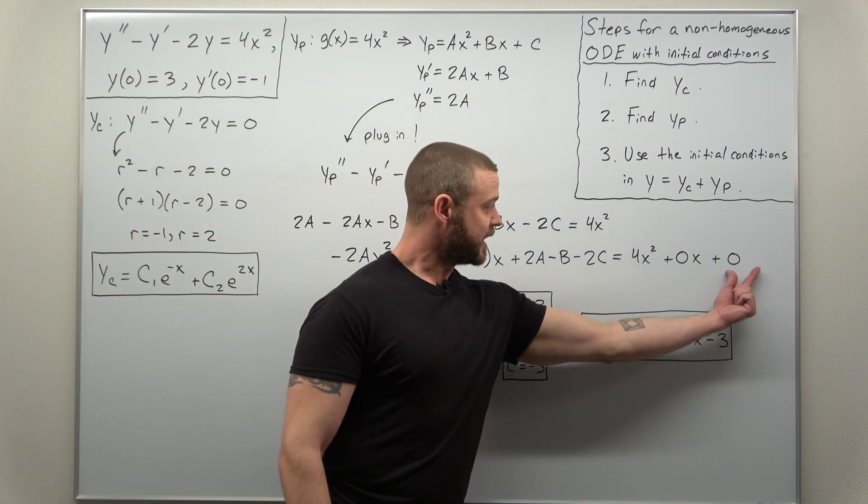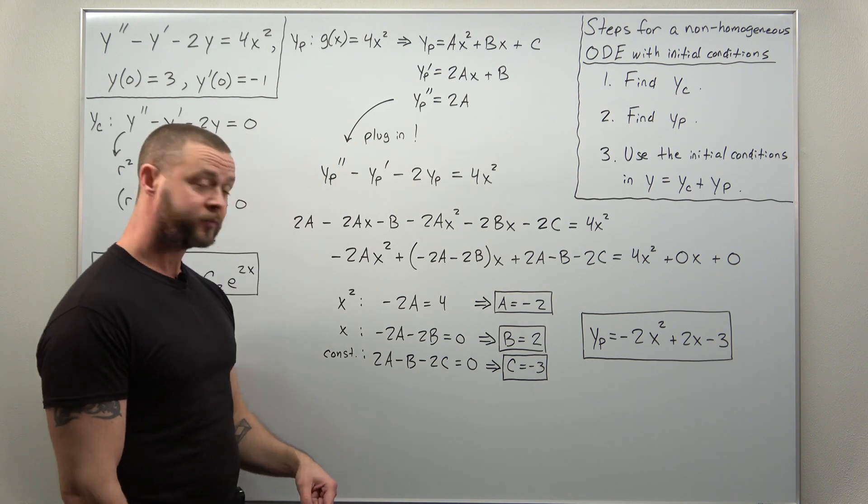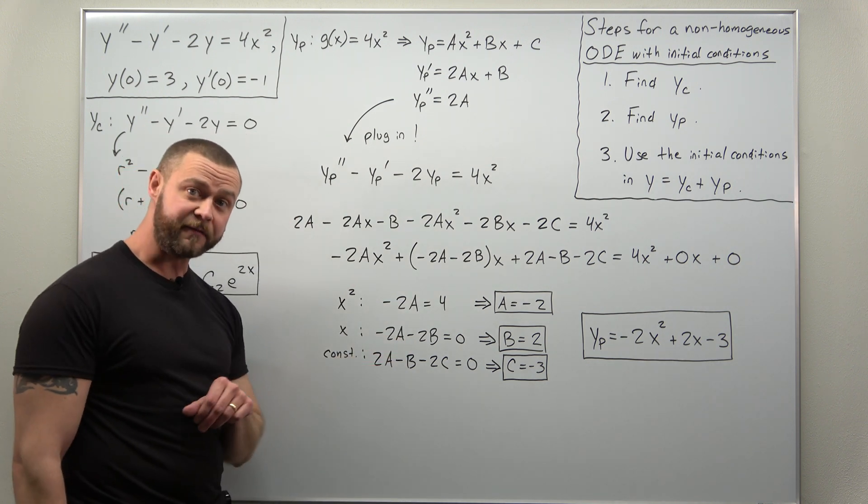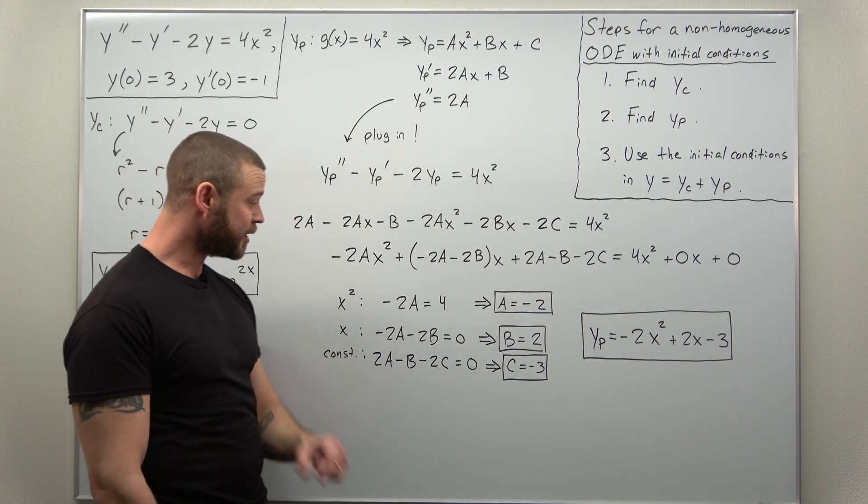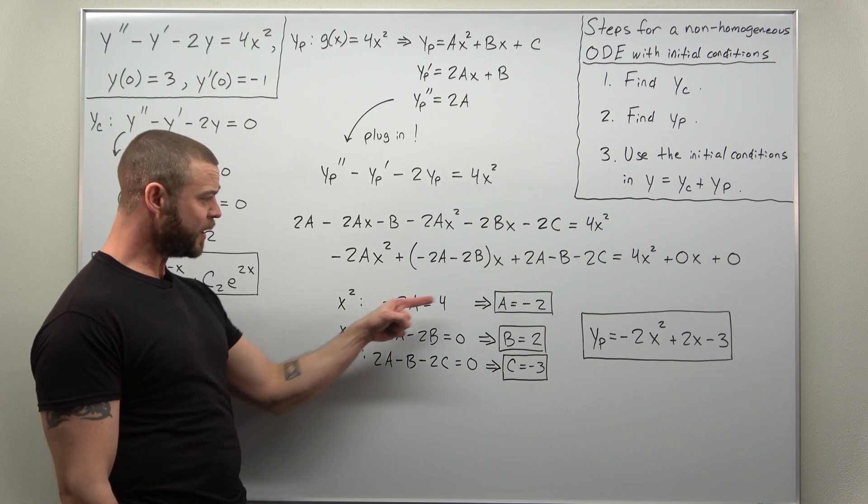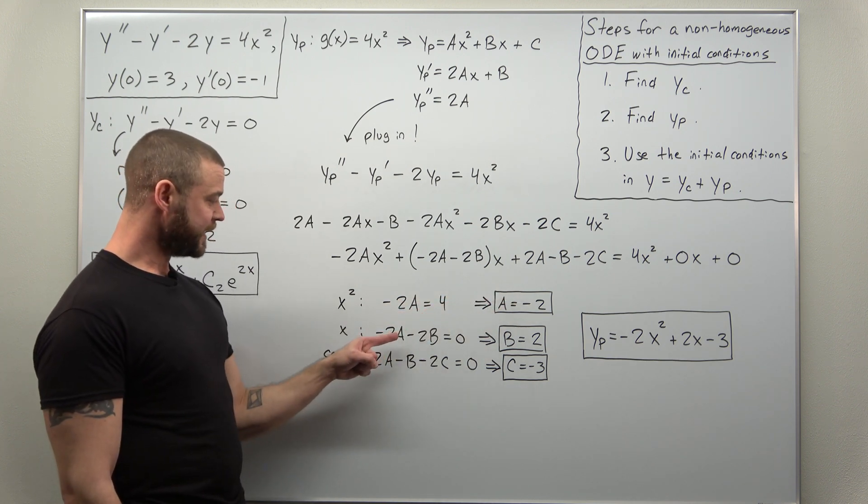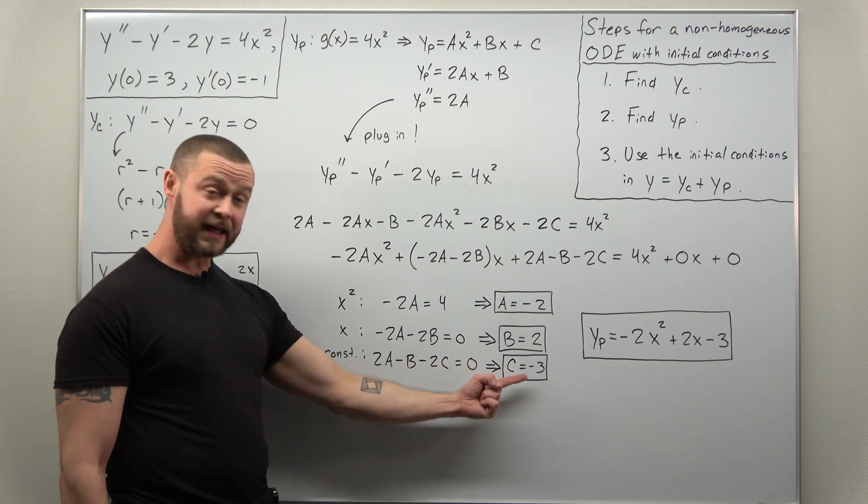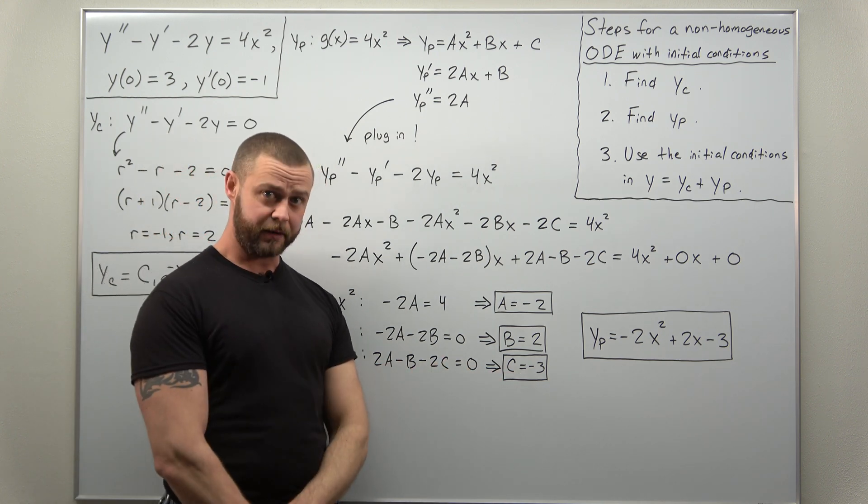This system is very straightforward. You can probably get through it very quickly. The first equation gives you A. Plug that in here, you get B. Plug them both in here to get C and you're done.